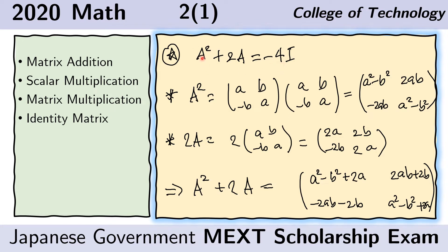For this problem we will just need to substitute the values of the matrices. For A, we have this value. And so for A squared, we have this product — this times this. If we do matrix multiplication, we obtain this. For 2A, we again substitute the same matrix for A, and the scalar product would be this. And negative 4I is just the same. For the left side of the equation, we just add these together, and this is what we obtain.